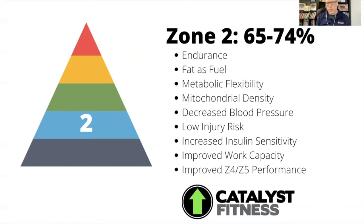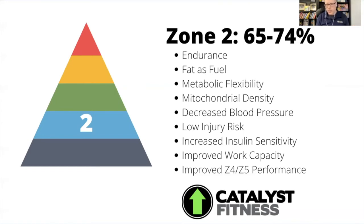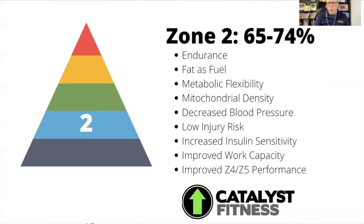A lot of the work capacity improvement comes from metabolic flexibility — using both fats and carbs for fuel. Carbs are an efficient fuel source but you can use them up quickly. If you can switch effectively between carbs and fat, you can work harder for longer because you've got two fuel sources. Zone two will also improve your top-end performance — your speed and sprinting — because building a broader aerobic base means you don't enter zone four and five until things get a lot harder.